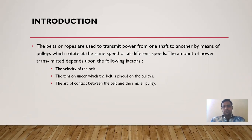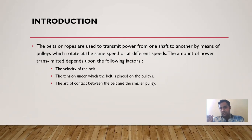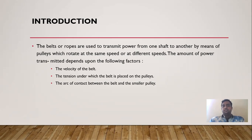The amount of power transmitted depends on the following factors: the velocity of the belt, the tension under which the belt is placed on the pulley, and the arc of contact between the belt and the smaller pulley. The velocity of the belt is the most important factor, and tension and arc of contact are directly related to it.